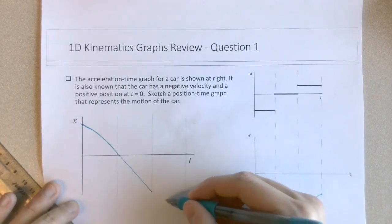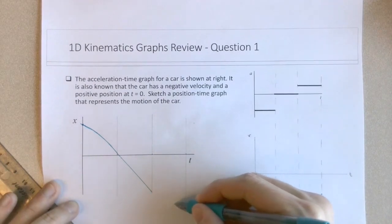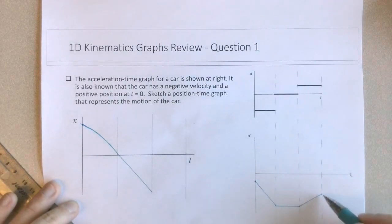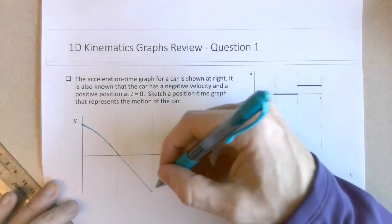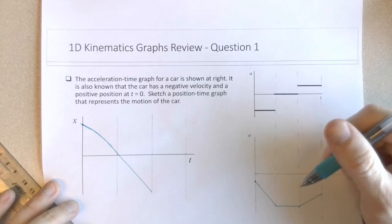So we have sort of a line sloping upwards, but we know at the end that this particular grid line, the velocity should still be negative. So there should still be a negative slope.